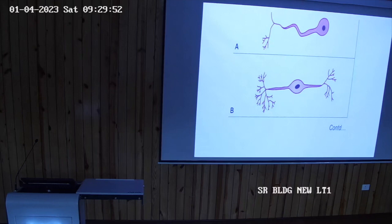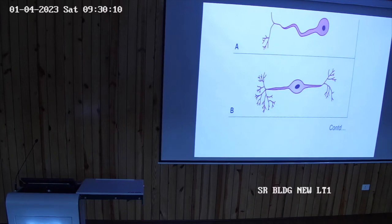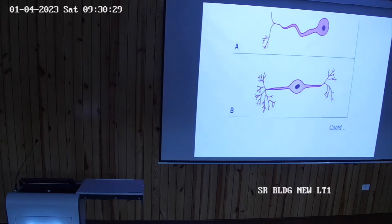The example of unipolar neuron — commonly asked in exams — is the mesencephalic nucleus of the trigeminal nerve, which is the fifth cranial nerve.